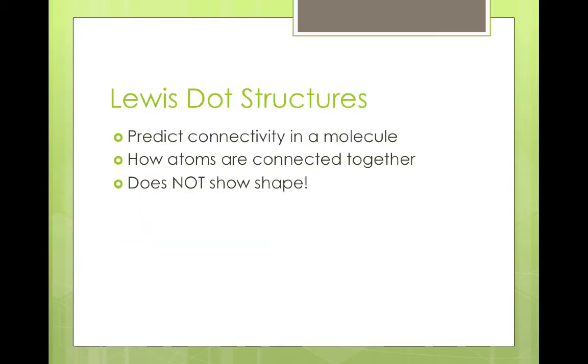To start off, a quick review of Lewis dot structures. Lewis dot structures are designed to predict connectivity in molecules, what's connected to what, how the atoms are connected together. It does not give us any information about the shape of a molecule. We can go from the formula CH4 to a map that shows us that the four hydrogens are connected to a central atom carbon. That's what Lewis dot structure does for us.